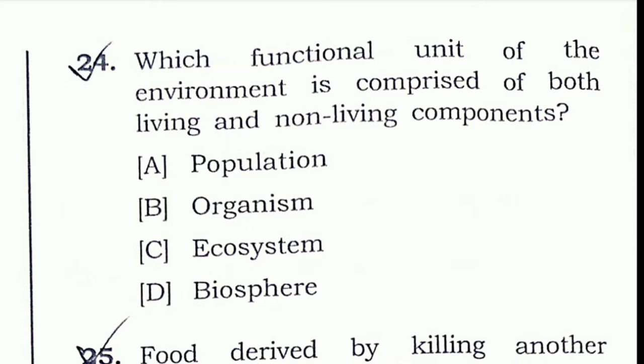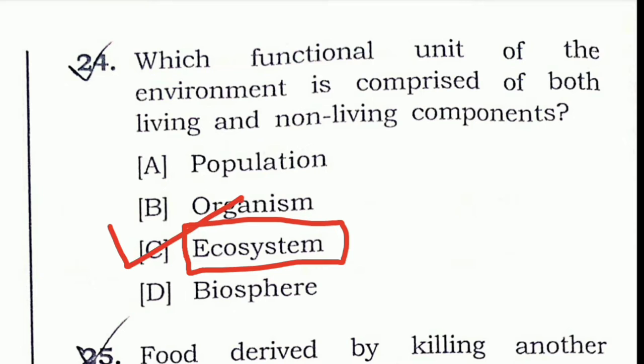Question 24: Which functional unit of the environment is comprised of both living and non-living components? The definition of ecosystem is the interaction between living things and non-living things — the relationship between environment and organisms. So the right answer is option C — ecosystem.